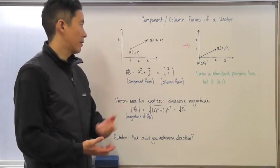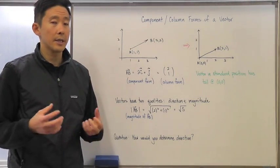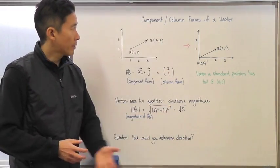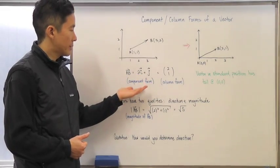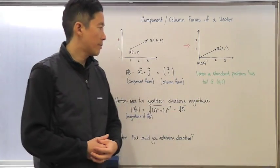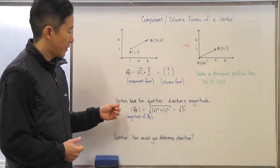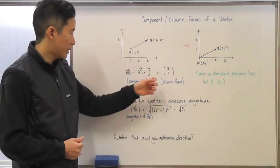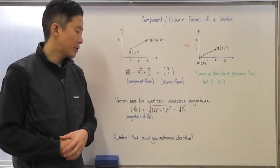That is the magnitude of vector AB. As for determining direction, there are many different ways to do so — we'll hear your thoughts on that in class. To summarize: you can start with a linear combination of i and j vectors as the component form, convert it simply into the column form, and if the vector is in standard position, the ending point and the column form resemble each other very nicely. Use the Pythagorean Theorem based on the column or component form to find magnitude.